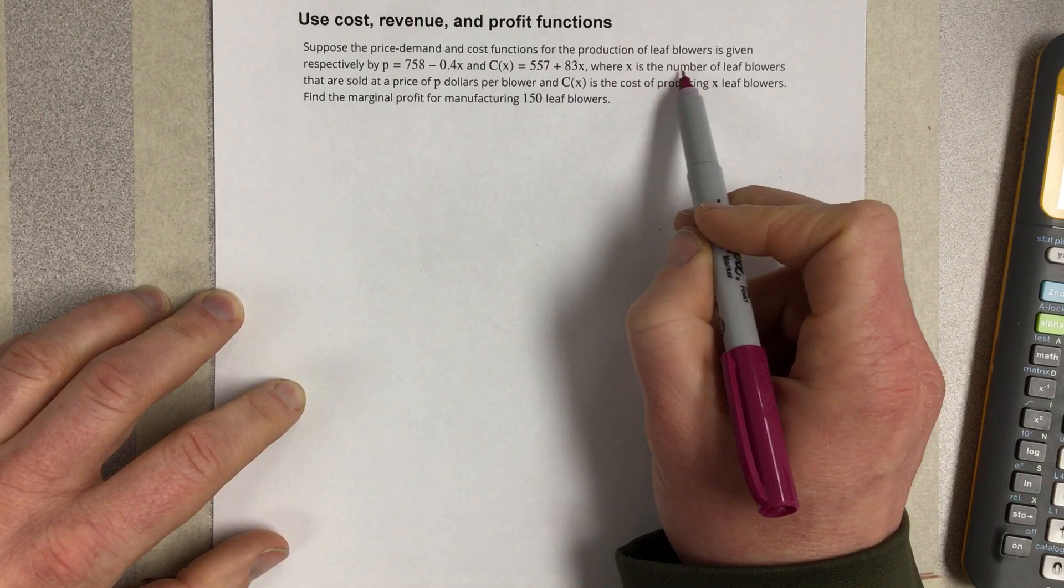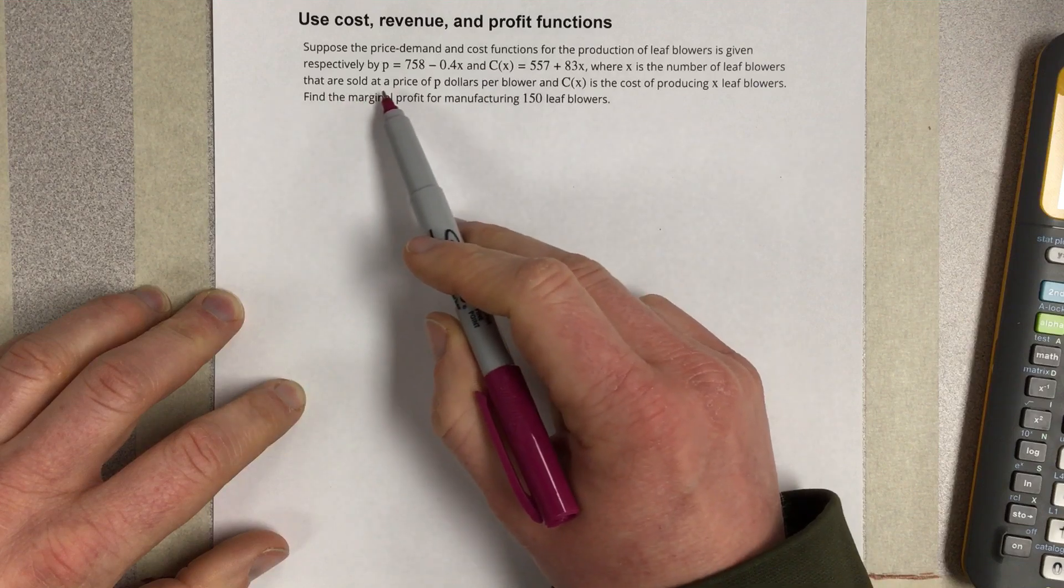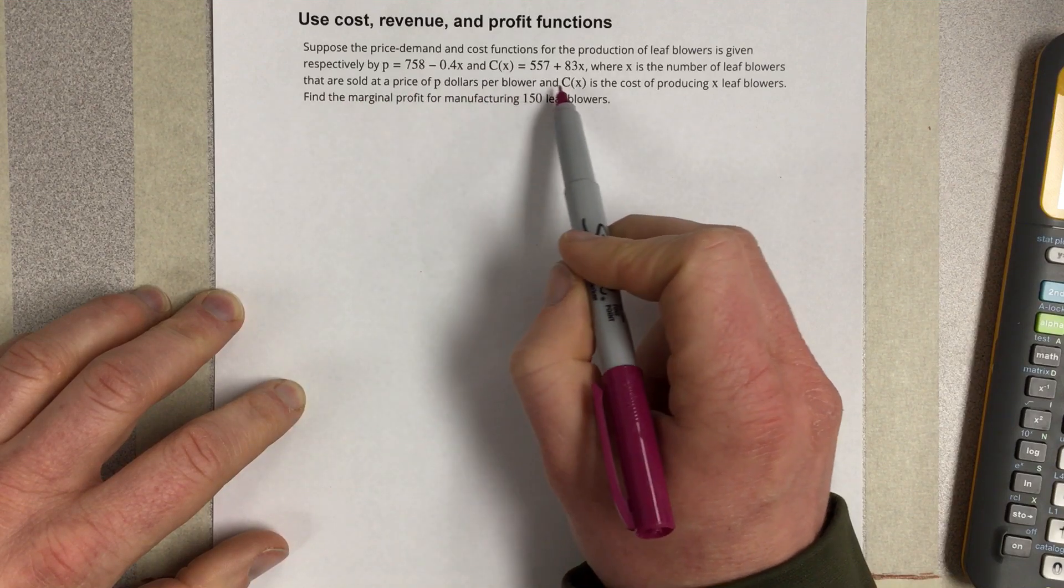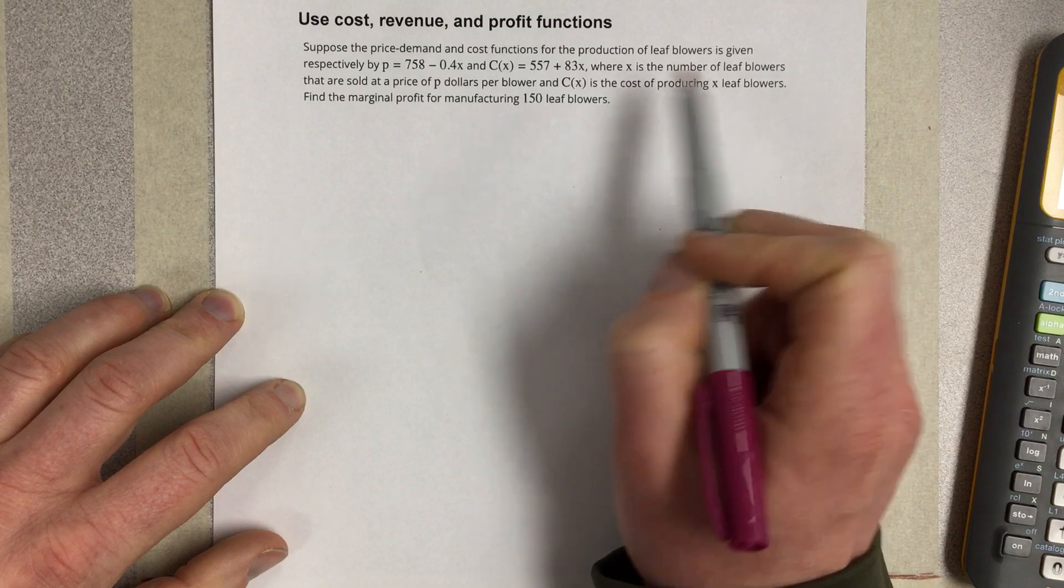And it says where x is the number of leaf blowers that are sold at a price of P dollars per blower, and C of x is the cost of producing x leaf blowers.